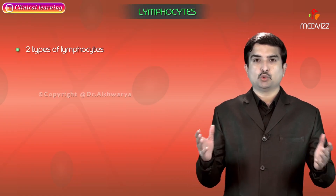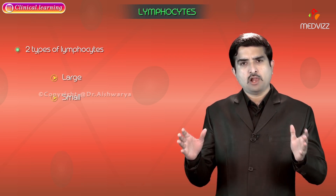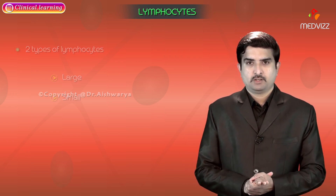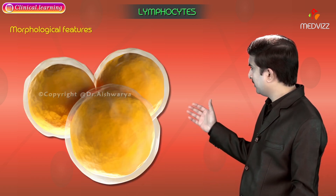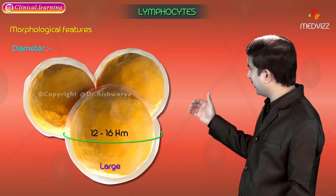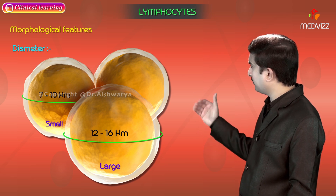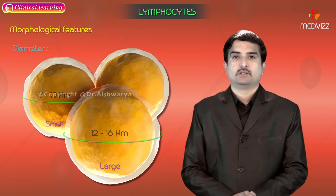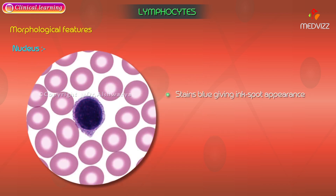Lymphocytes have two types: large and small, having almost similar structure. The diameter of large lymphocytes varies from 12 to 16 micrometers and small lymphocytes from 7 to 10 micrometers. Lymphocytes have a large, round, single nucleus which almost completely fills the cell, staining blue very deeply giving an ink spot appearance.